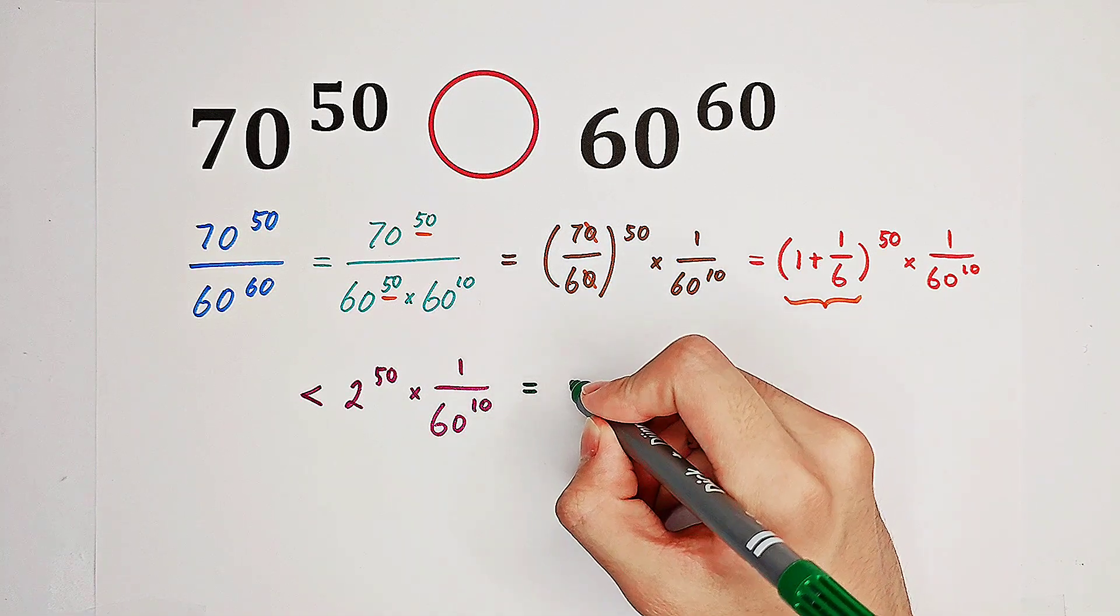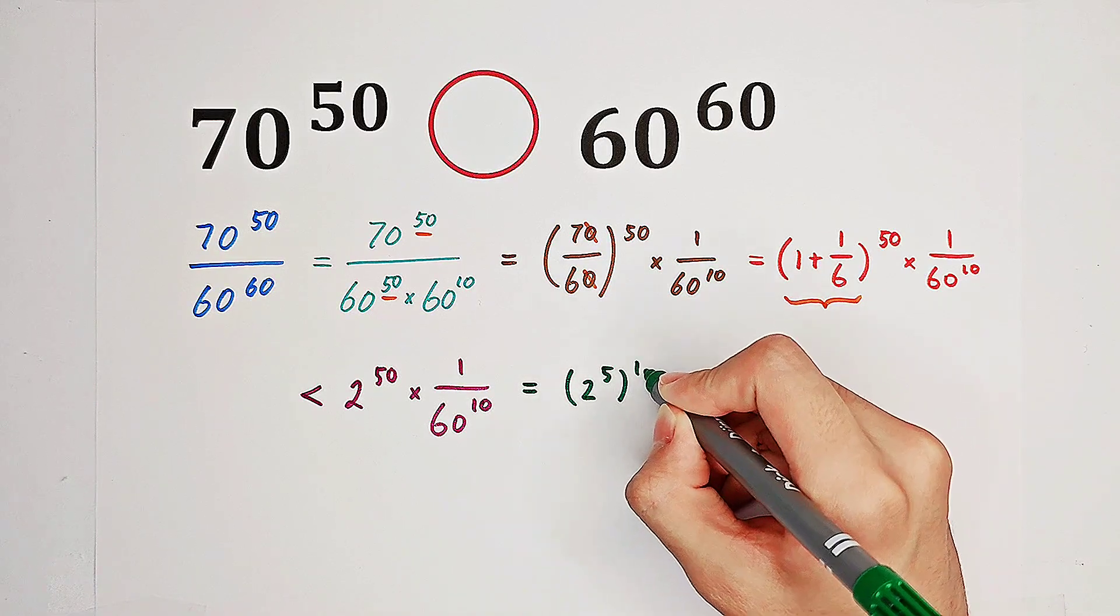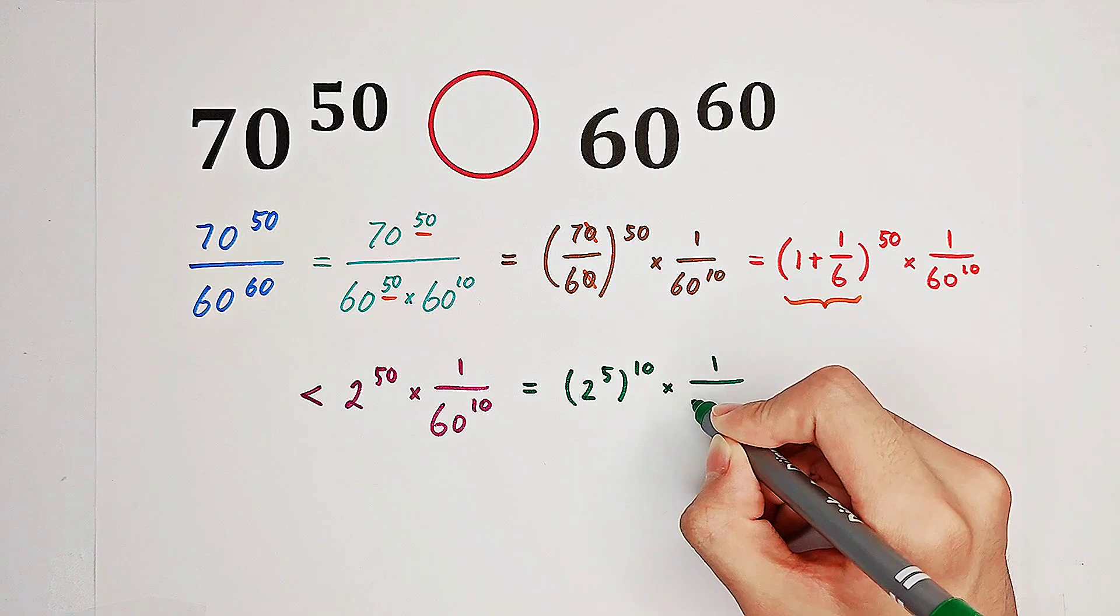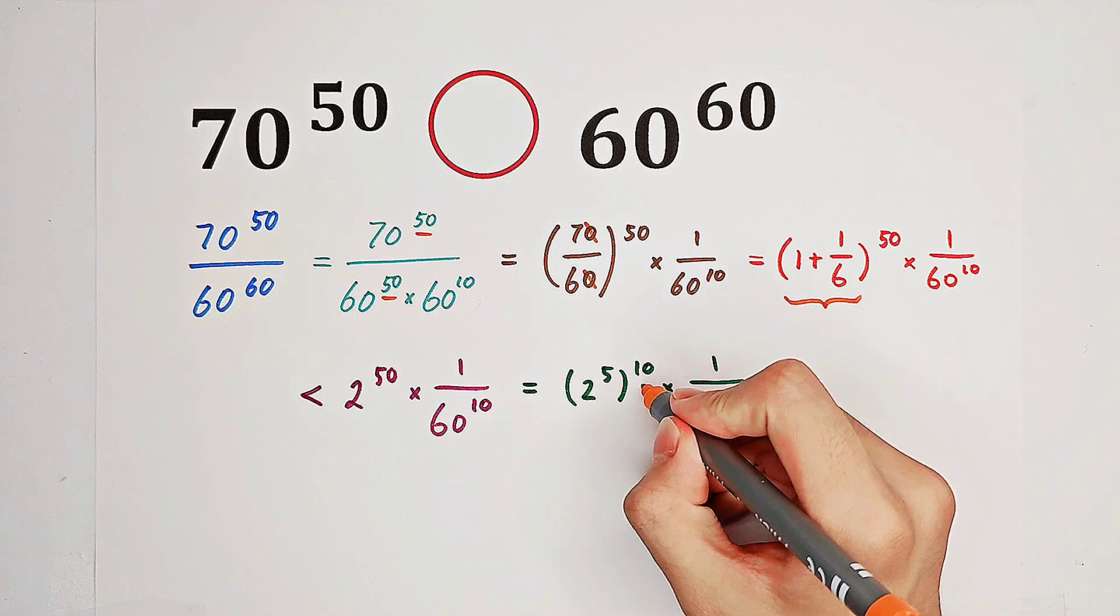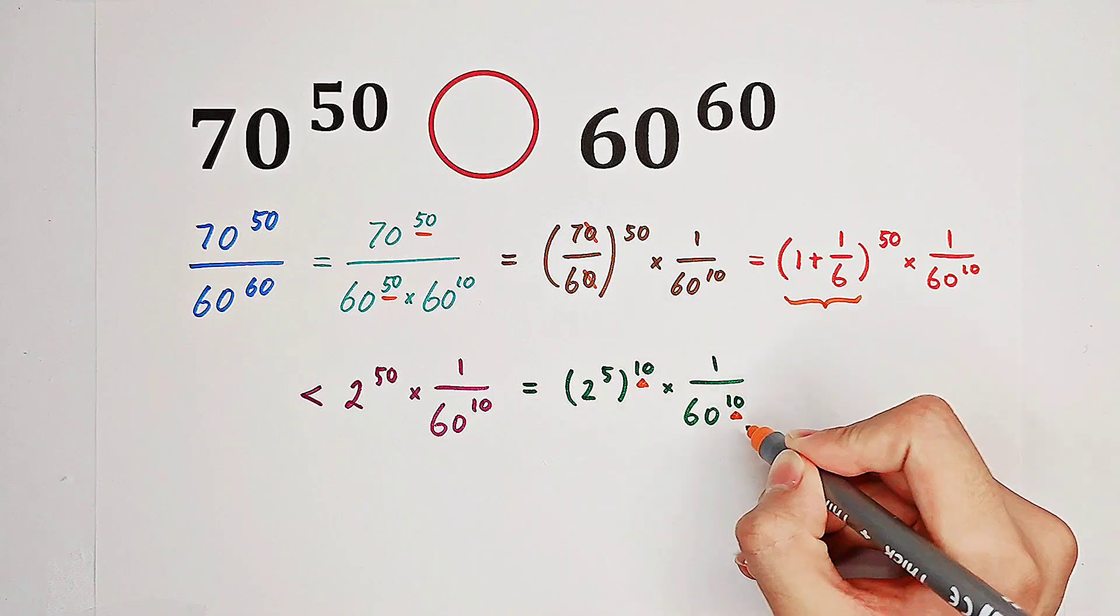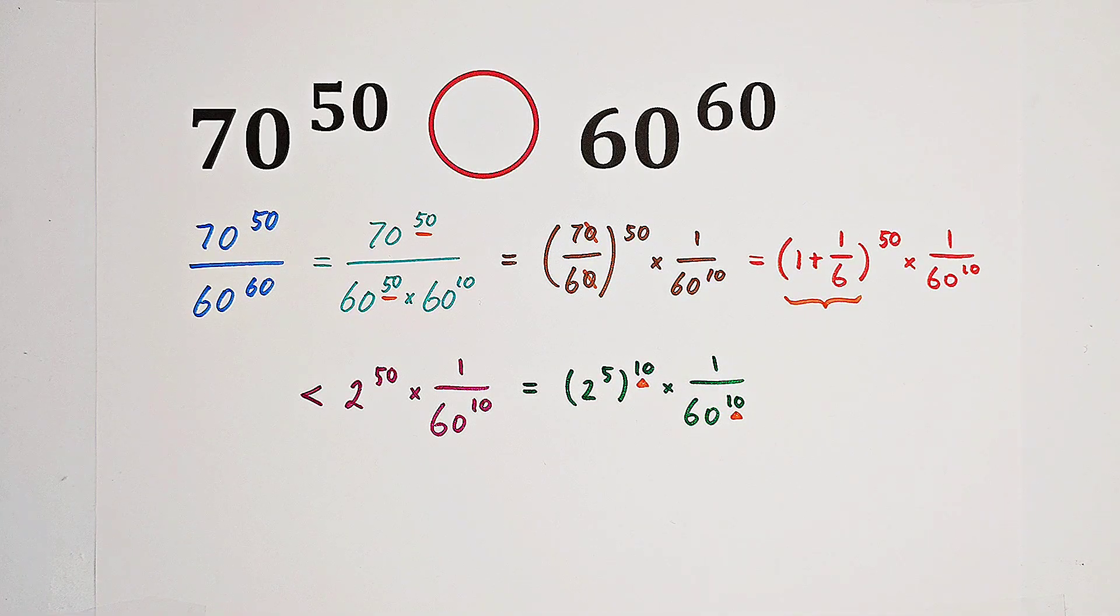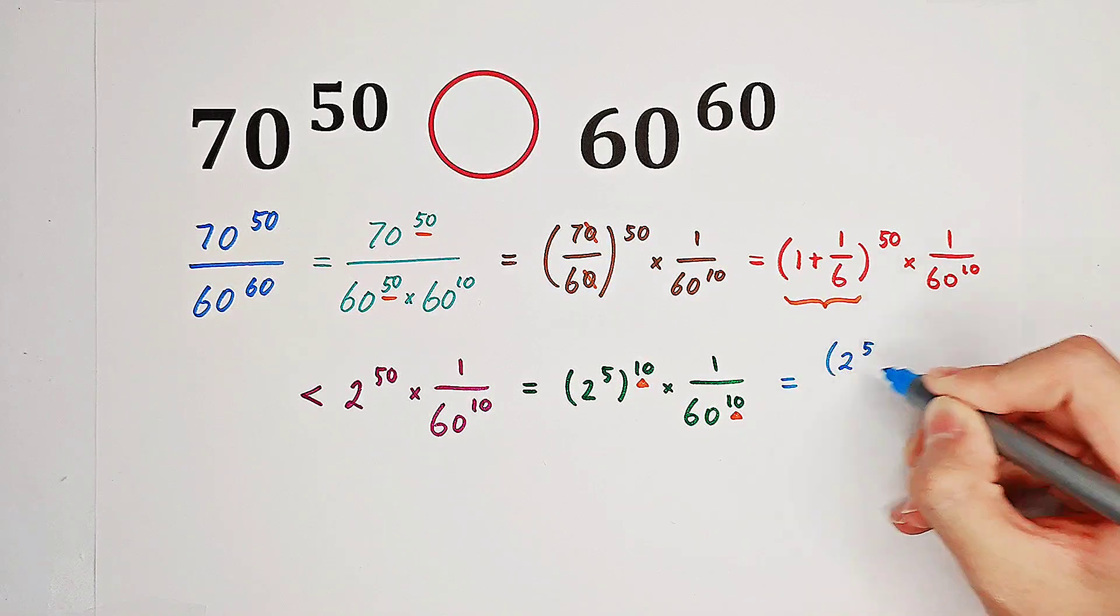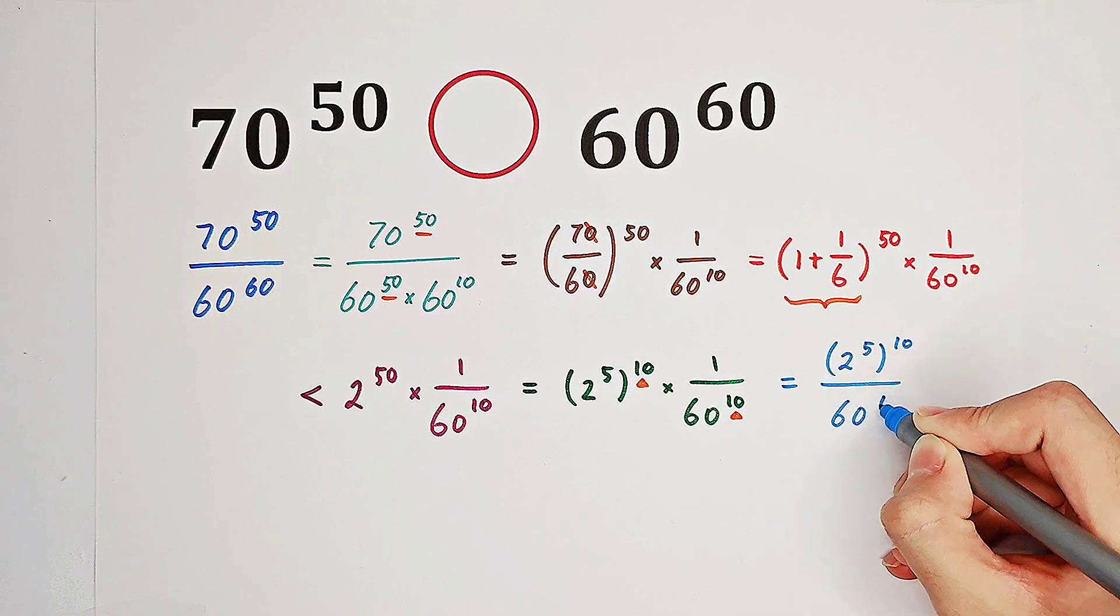2 to the power of 50, what's that? It's 2 to the power of 5, then all to the power of 10. 2 to the power of 50 times 1 over 60 to the power of 10. Both of them have the same exponent, that's 10. And this one is 2 to the power of 5 all to the power of 10 over 60 to the power of 10.